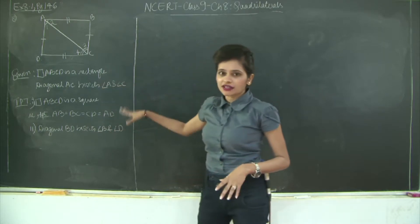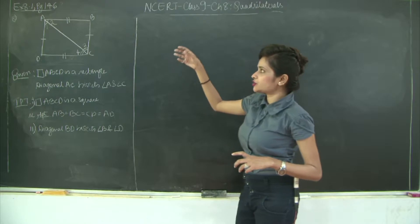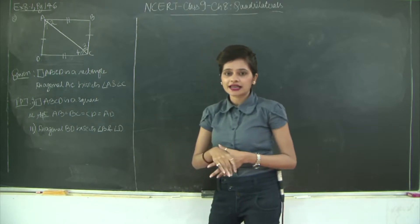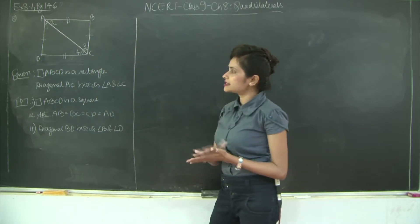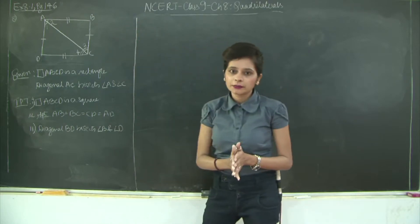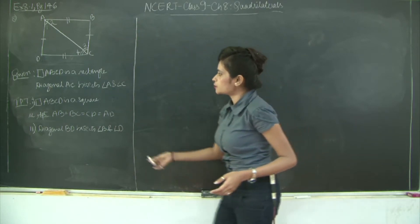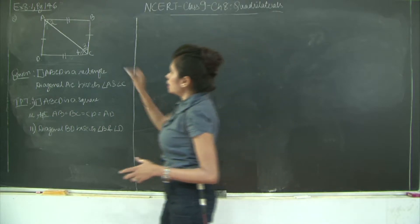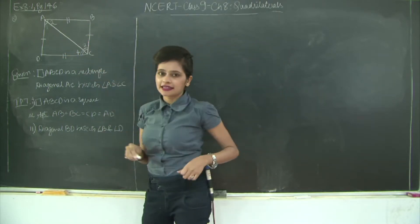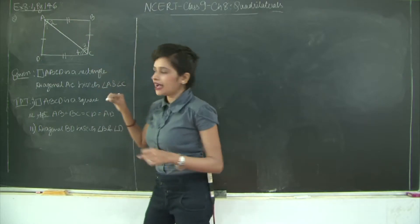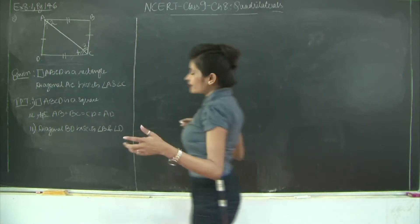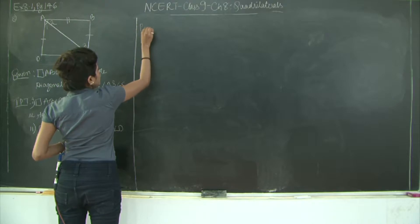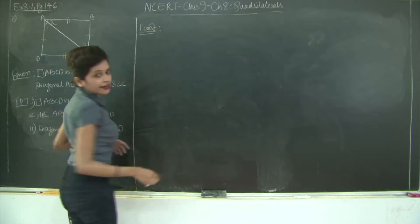Let's check from the given data what can be proved. We know angle 1 equals 2 and angle 3 equals 4. Since ABCD is a rectangle, the opposite sides are equal: AB equals DC and AD equals BC. To prove all four sides equal, let's consider triangles using AC as the base. We will take triangle ABC and prove two sides equal, similar to the previous question.